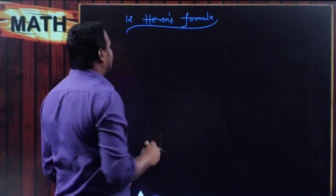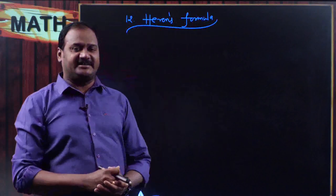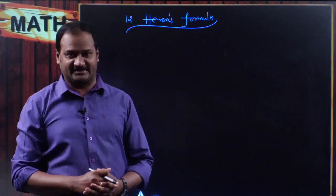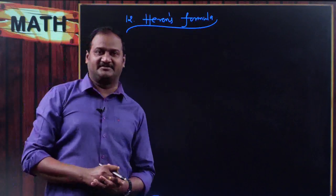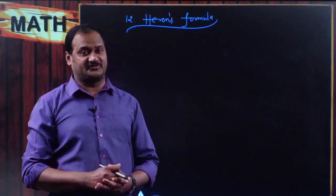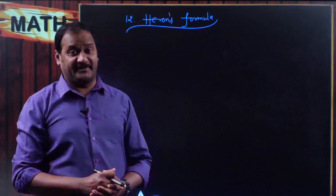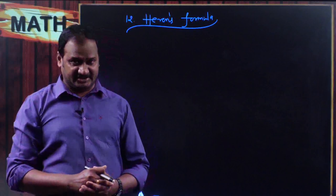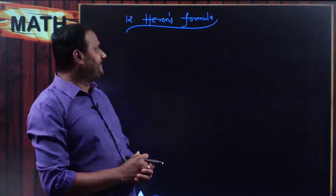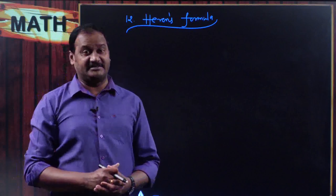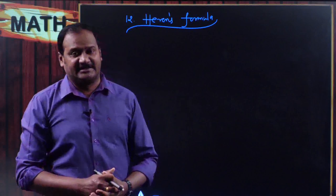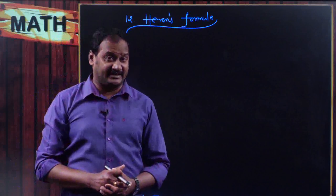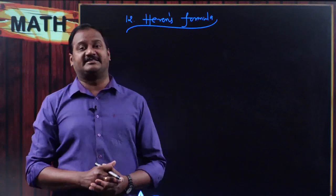I think most of you read this as 'Heron's formula' or something like that, but it is not. It is called Heron's formula. A famous mathematician named Heron introduced this formula. This formula can be used to find out the area of a triangle when all three sides are given.